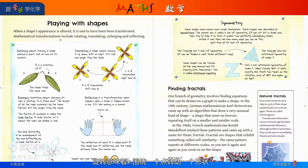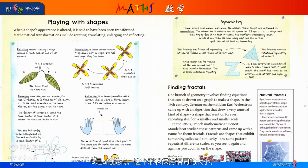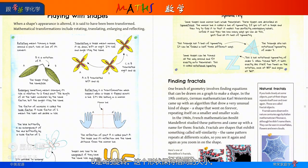Rotating means turning a shape around a point, such as one of its corners. B is a rotation of A. The shape stays the same size.